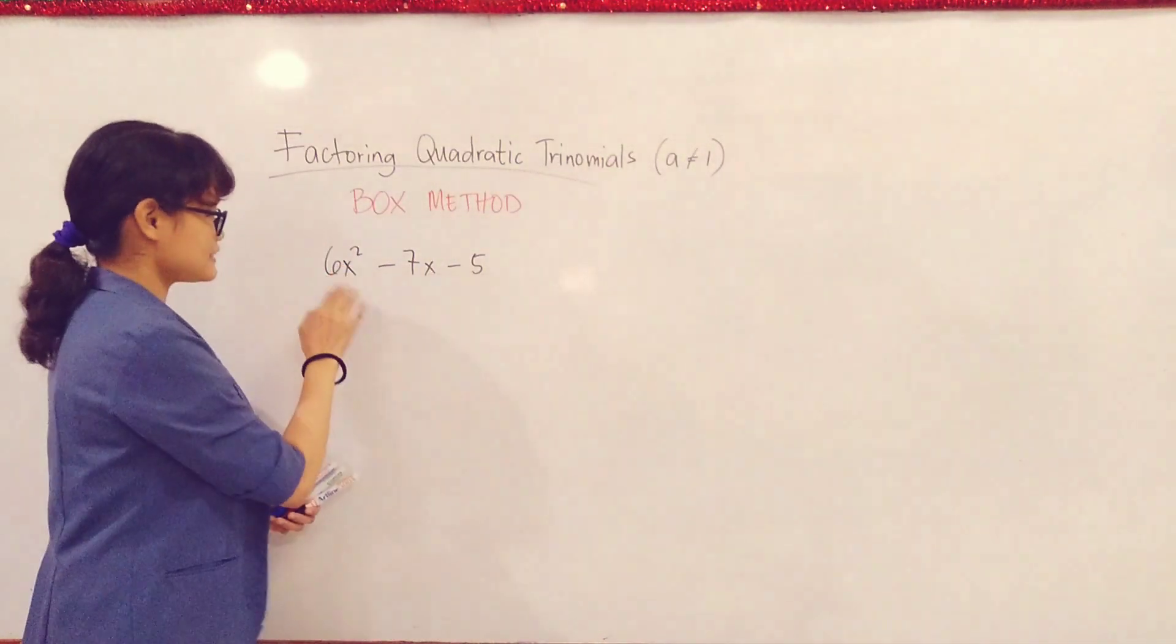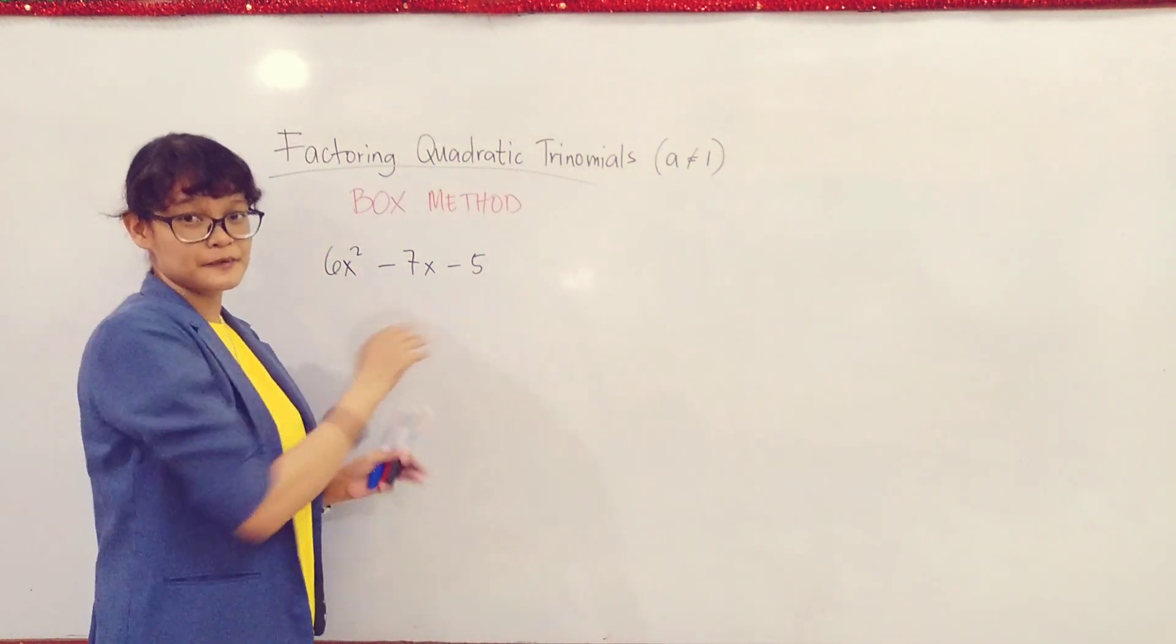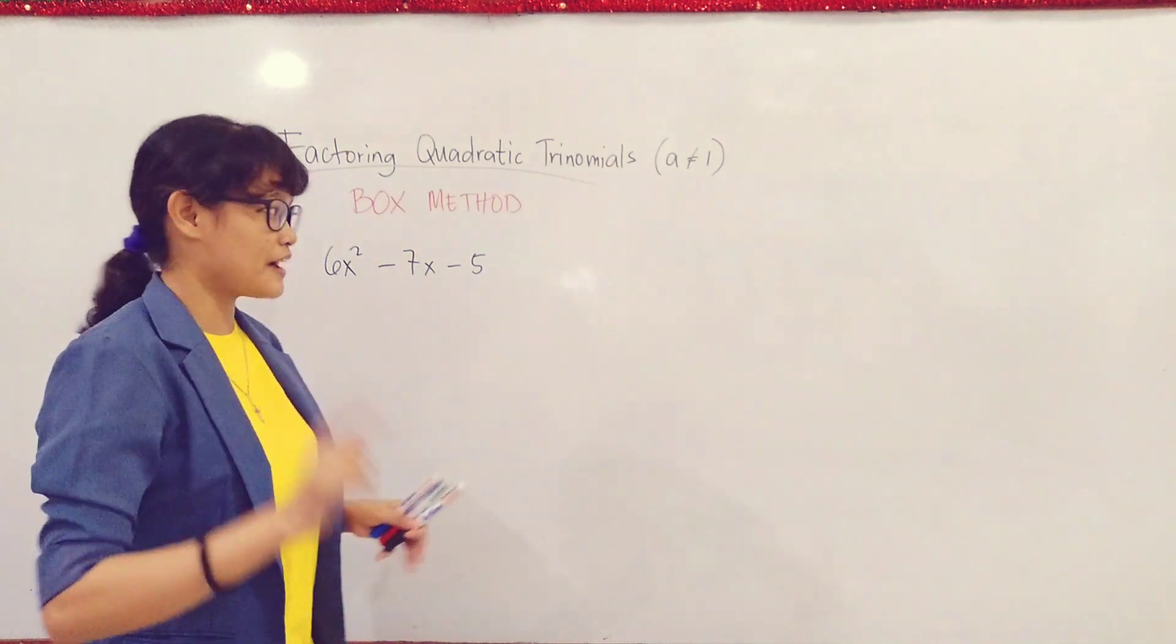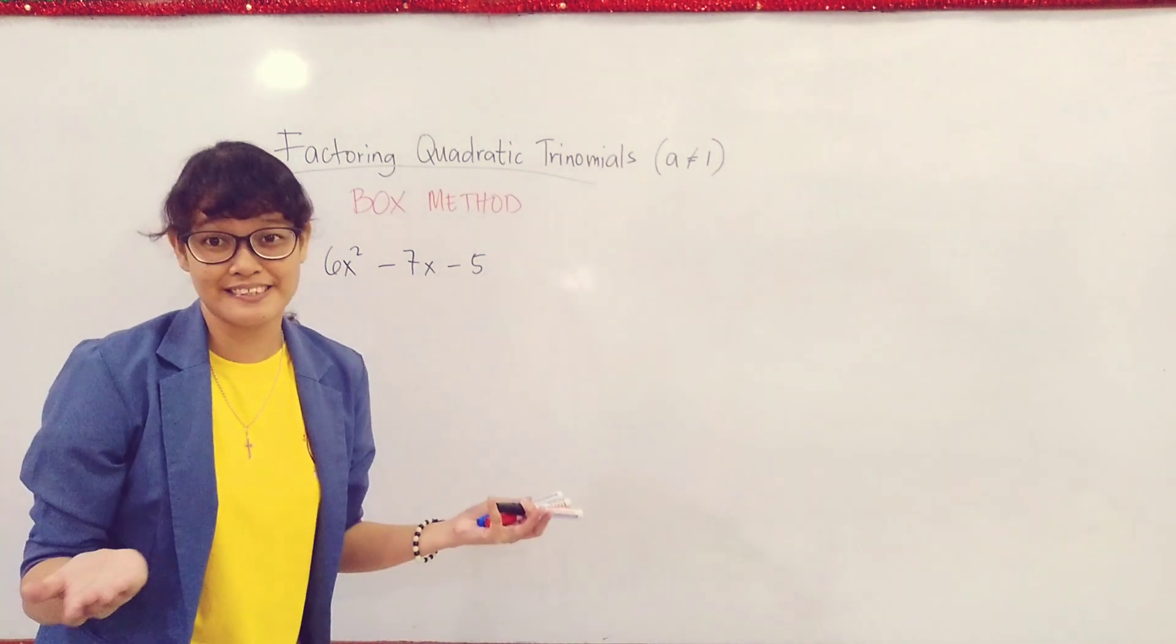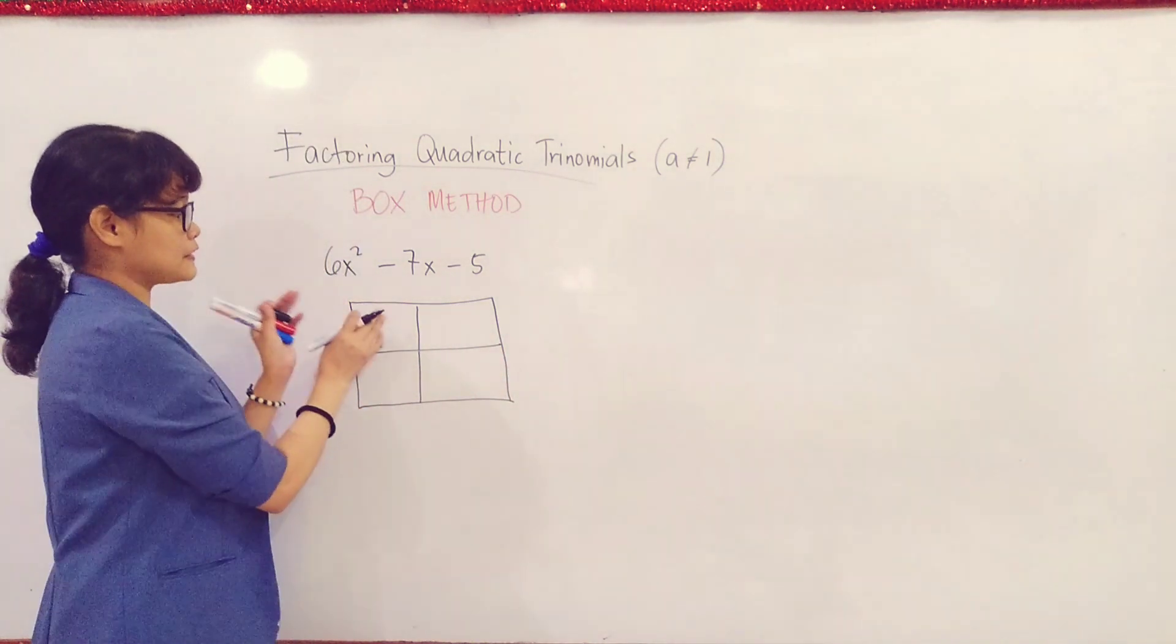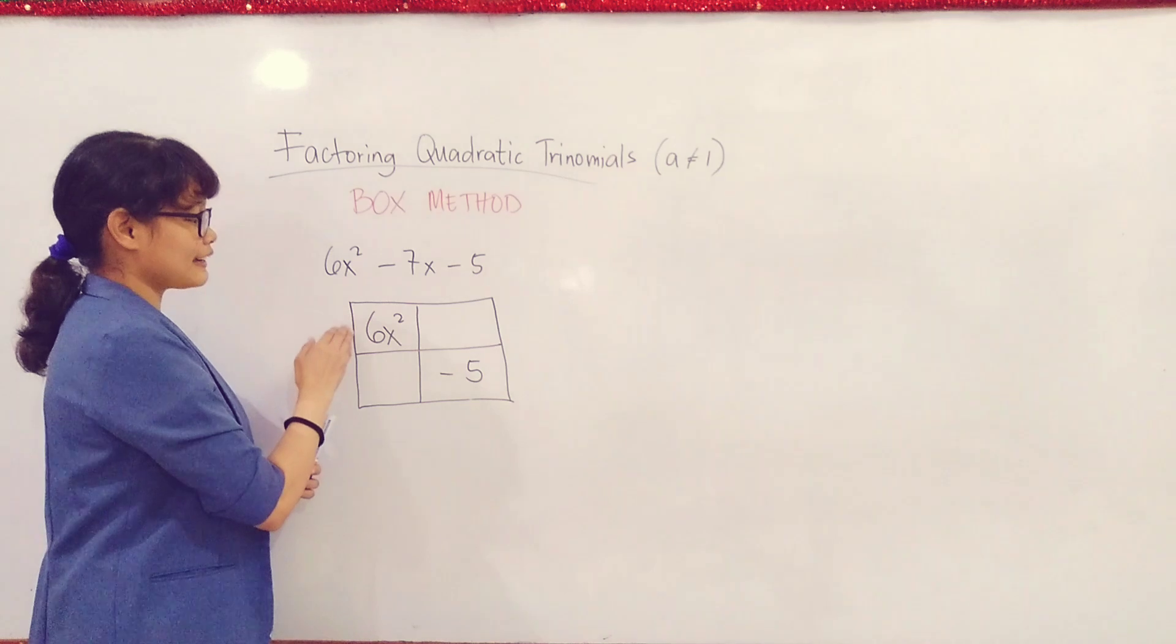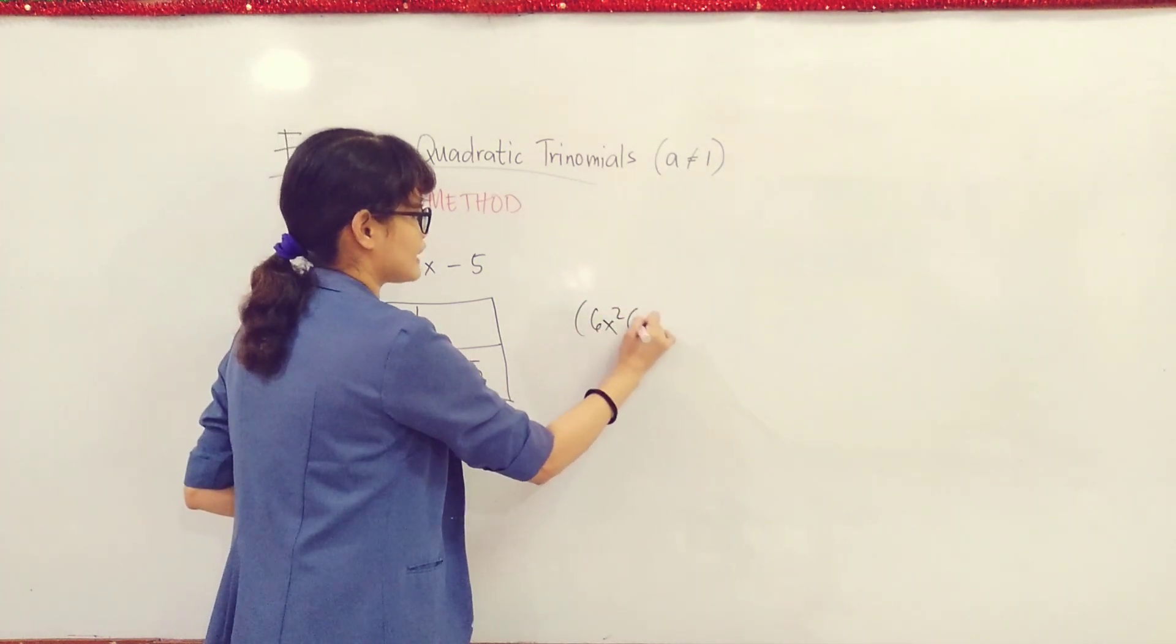So let's go for our next example. You have 6x² - 7x - 5. Again, first check that it's in standard form: Ax² + Bx + C. So the terms are arranged accordingly. Next, check if they have a greatest common factor. In this case, you have 6, 7, and 5. These 3 numbers are relatively prime to one another, which means they don't have any common factor except 1. So we can now proceed to the box method by starting with the first step, which is to draw a box.